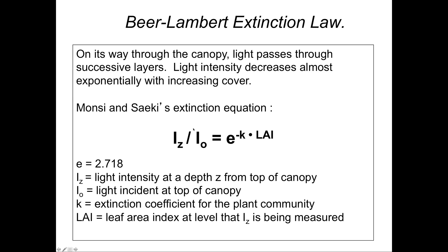On the left-hand side is a term that basically describes how much light is transmitted at any given depth from the top of the canopy. This is described as the light intensity at depth Z — your focal depth — divided by the light intensity incident on the top of the canopy. So this is essentially how much of the incoming light is transmitted to the depth of interest.